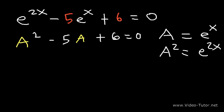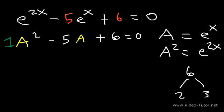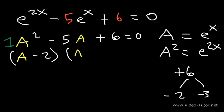We have a trinomial where the leading coefficient is 1. What two numbers multiply to the constant term 6 but add to the middle coefficient negative 5? We know that 2 times 3 is 6, but 2 plus 3 adds up to positive 5. However, negative 2 and negative 3 still multiply to positive 6 but add to negative 5 — so those are the numbers we need. Now we can factor it as a minus 2 times a minus 3.